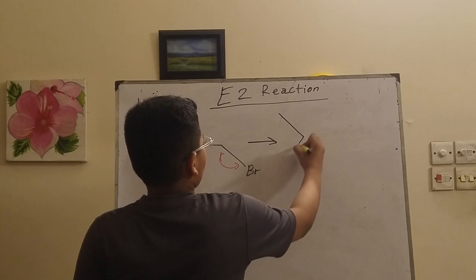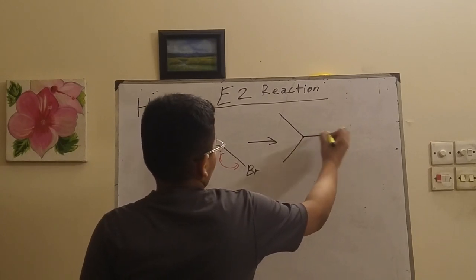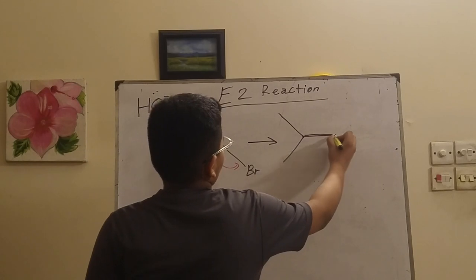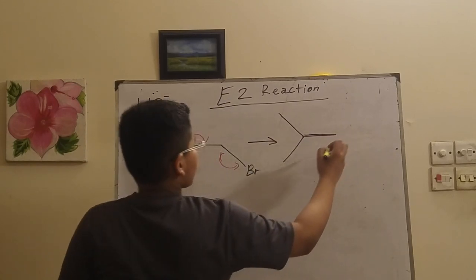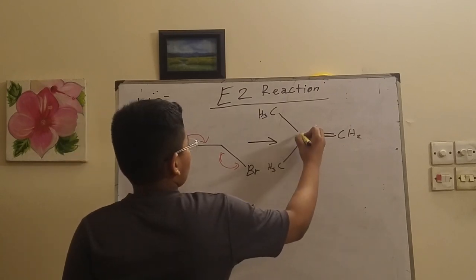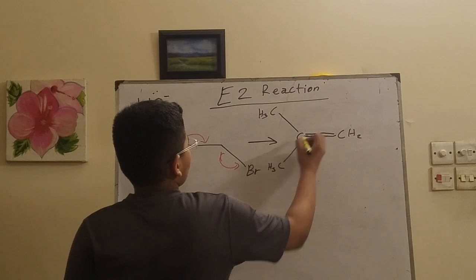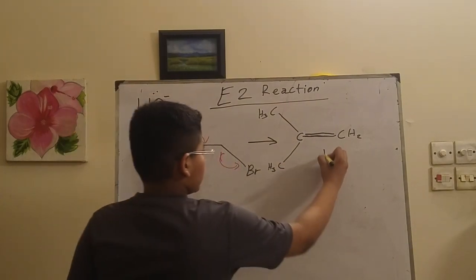So it pushes some of the electrons in this bond, making the bromide leave as the leaving group. Now we have a butene, and the proton has become water by mixing with the hydroxide ion, and the bromide is gone.